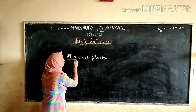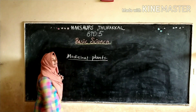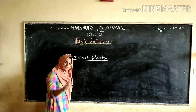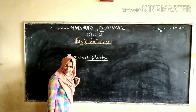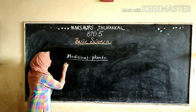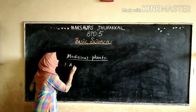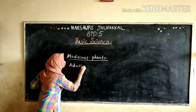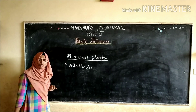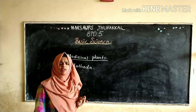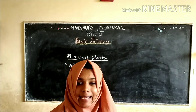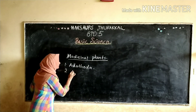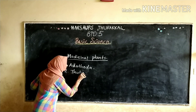Give me some examples of medicinal plants. First one — Adathoda. Adathoda is one medicinal plant. A common medicinal plant we can see in our locality is Tulasi. Second one, Tulasi.